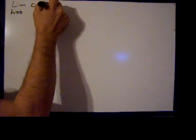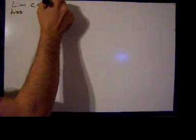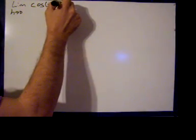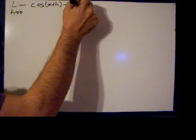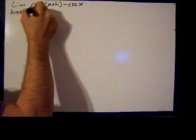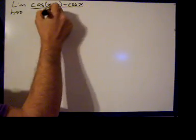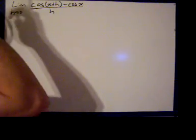Hello, we're going to find the derivative of the cosine of x by the limit definition. So we're going to take the limit as h goes to zero of the cosine of x plus h minus the cosine of x divided by h.